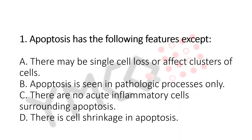Apoptosis has the following features except: a. There may be single cell loss or affect clusters of cells. b. Apoptosis is seen in pathologic processes only. c. There are no acute inflammatory cells surrounding apoptosis. d. There is cell shrinkage in apoptosis. And the answer is...